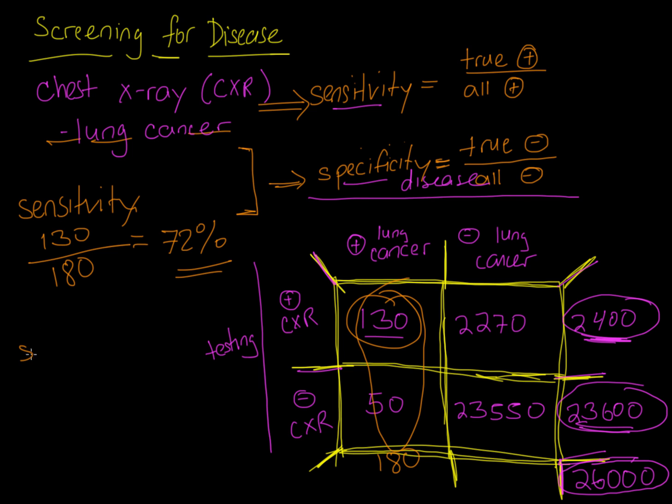Now let's go over the specificity. So the specificity, true negatives. Where are our true negatives here? Lung cancer negative, chest x-ray negative, all these people. Those were true negatives, 23,550. And how about all negatives? Well, all negatives are going to be that whole number. And that's 25,820. And so here's our ratio to get the specificity. And that ends up being about 91%.